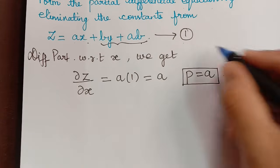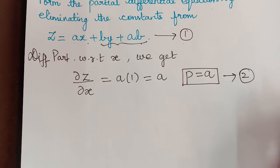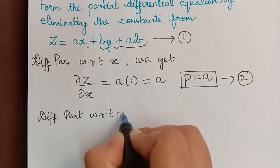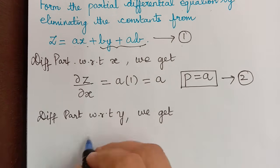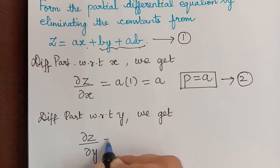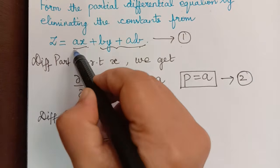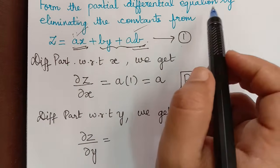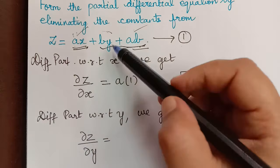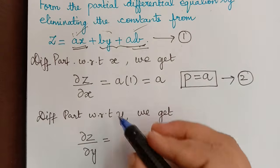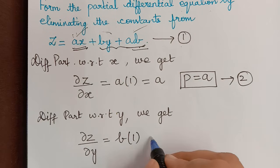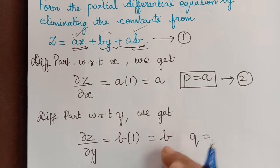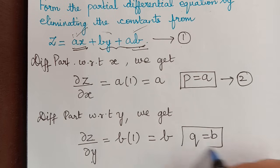In a similar way, we partially differentiate with respect to y. Here, the terms ax and ab are constants with respect to y, so they differentiate to 0. We are left with by, and the differentiation of y is 1, so we get b. Since ∂z/∂y = q, we have q = b. Let this be equation 3.